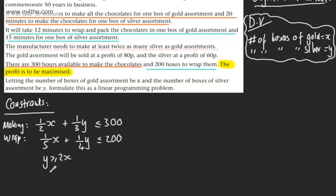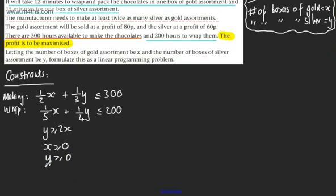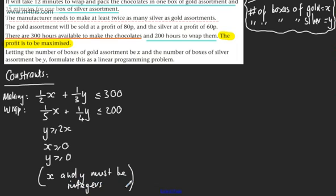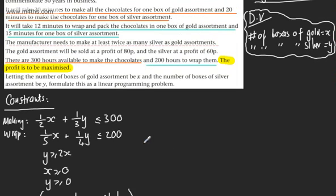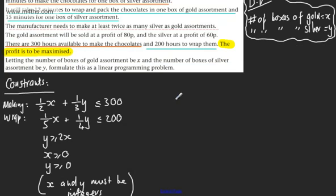We need to consider the other constraints. X has to be greater or equal to 0 — we can't have minus 8 boxes of gold chocolates. Y must be greater or equal to 0. And as an additional constraint, x and y must be integers, because we can't have 3.7 boxes of silver or 9.8 boxes of gold.